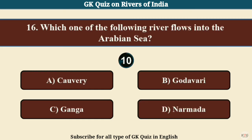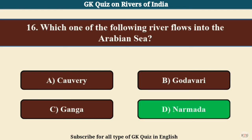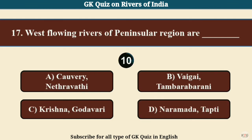Question No. 16. Which one of the following rivers flows into the Arabian Sea? Answer D: Narmada.